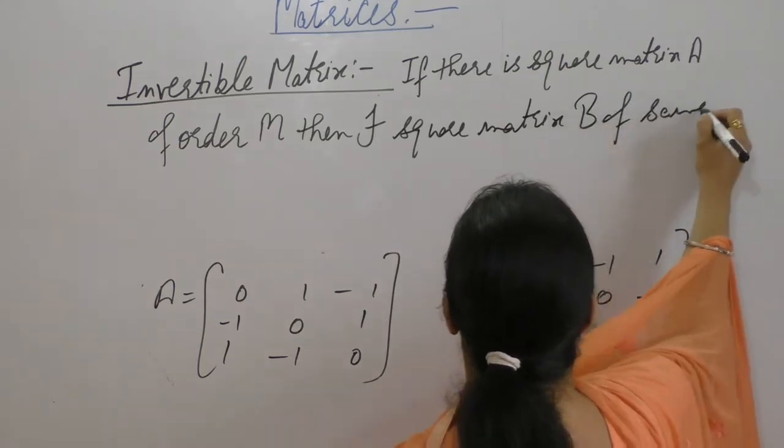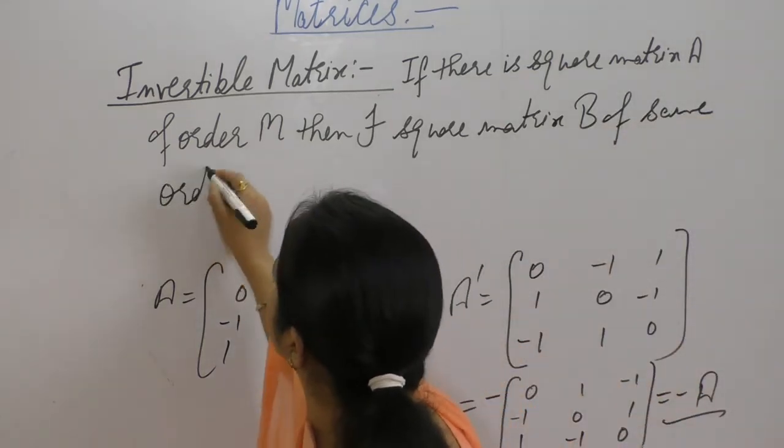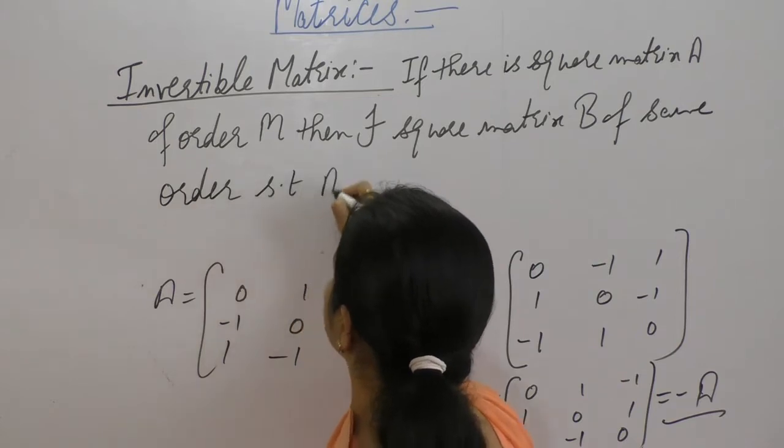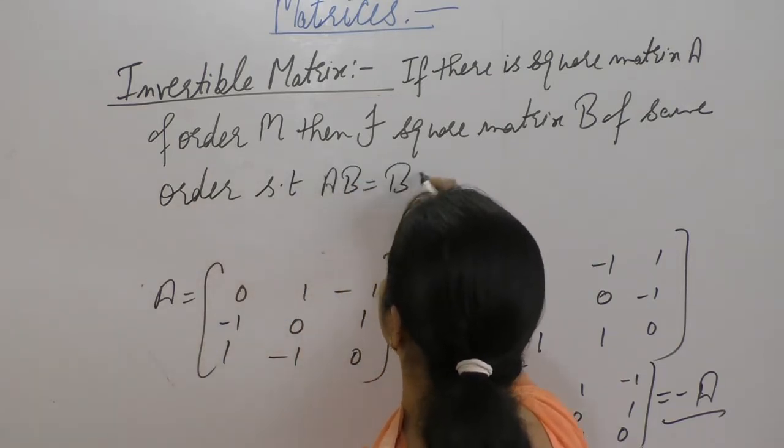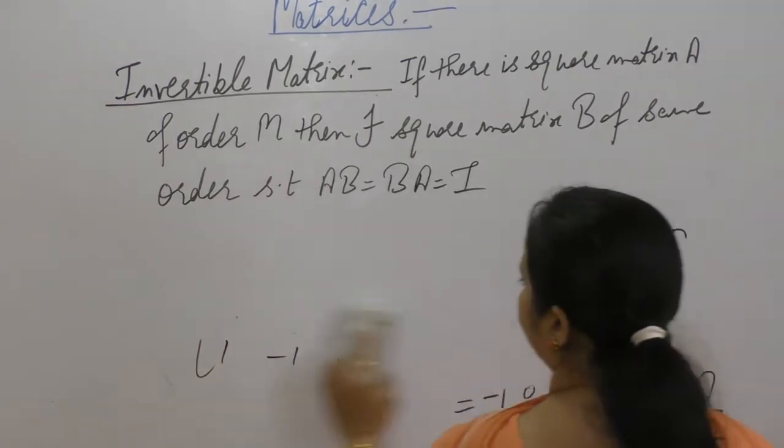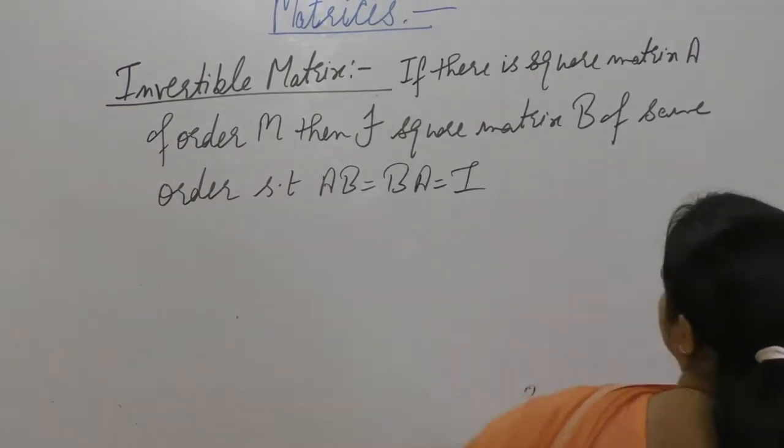Same order, such that AB is equals to BA is equals to I, identity matrix.